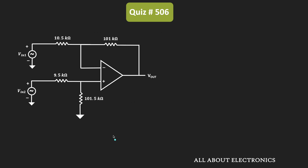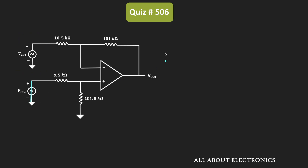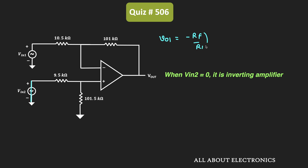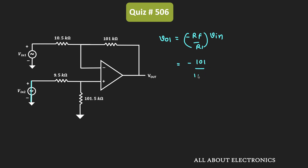Before finding that, let us first find the expression of the output voltage in terms of the two input voltages. To do that, we consider one voltage source at a time. If we consider input voltage Vin1 alone, then Vin2 acts as a short circuit. In this condition, the output voltage Vo1 is equal to minus Rf divided by R1 times the input voltage, which gives Vo1 equal to minus 101 divided by 10.5 kilo ohms times Vin1.